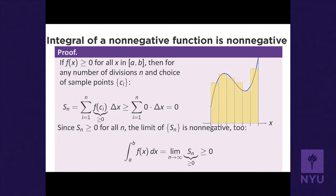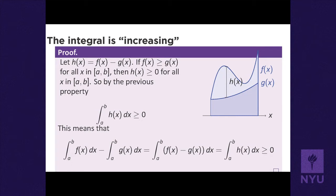For the second comparison: if f(x) ≥ g(x), define h(x) = f(x) - g(x) ≥ 0. The integral of a non-negative function is non-negative, so ∫h(x)dx ≥ 0. But ∫h(x)dx = ∫f(x)dx - ∫g(x)dx, so the difference between those two integrals is non-negative, meaning the integral of f is at least as big as the integral of g.